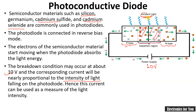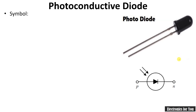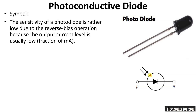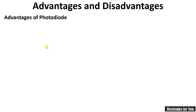The current is directly proportional to the intensity of light. The photograph of a photodiode looks like this, and the symbol is similar to that of a p-n junction diode along with rays of light. The sensitivity of a photodiode is rather low because it operates in reverse bias, so the current is very small — only a fraction of a milliampere. A photodiode is faster than a simple p-n junction diode because an intrinsic layer is used.